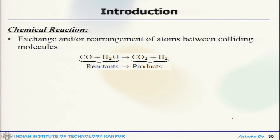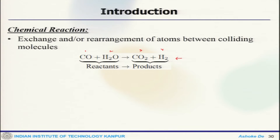Moving ahead, we can look at some of the fundamentals of the combustion process, where we look first at the chemical reaction. This is a sample chemical reaction which is happening, and there are multiple species — 1, 2, 3, 4. There are 4 species involved here; on one side you call them reactants and on the other side products.